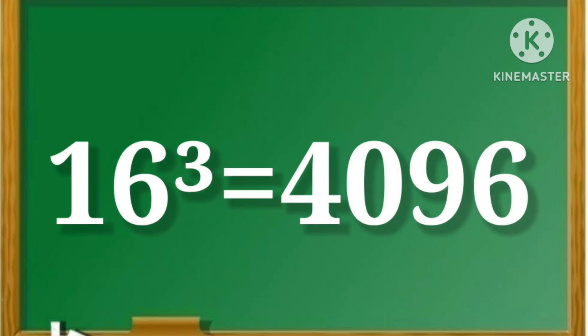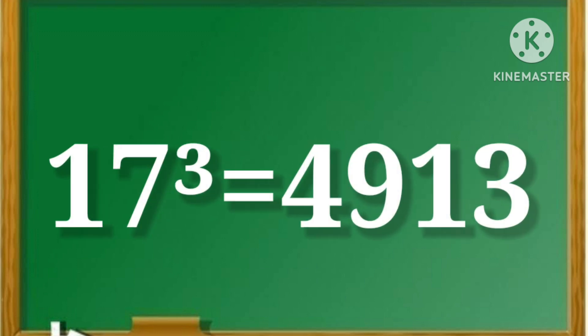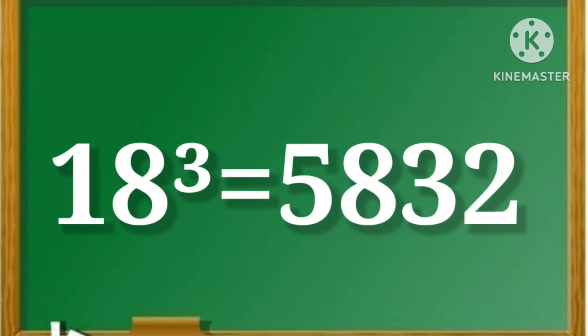16 cube is equal to 4096. 17 cube is equal to 4913. 18 cube is equal to 5832.